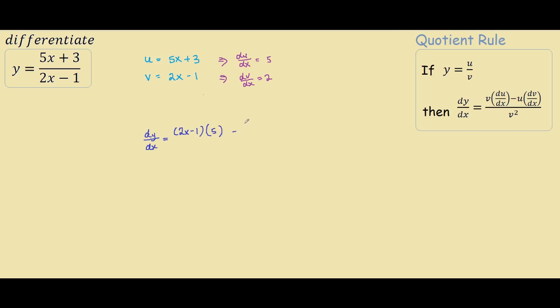Minus u which is 5x plus 3 times dv/dx we found that as 2. This is all over 2x minus 1 squared.